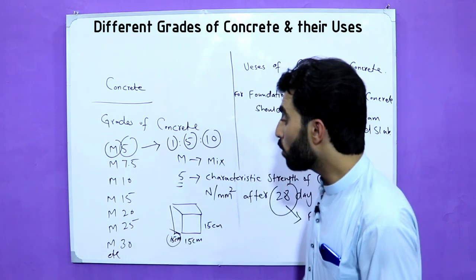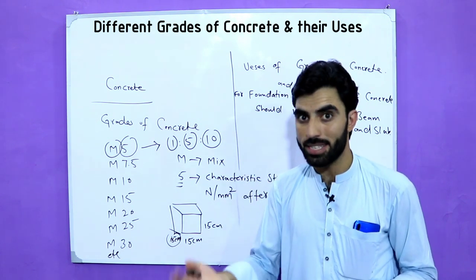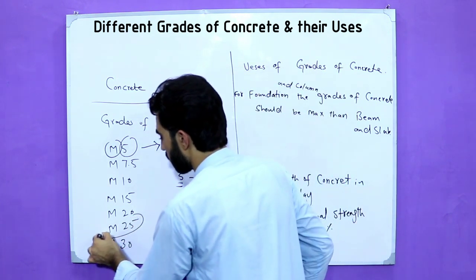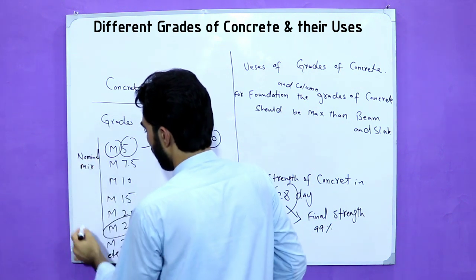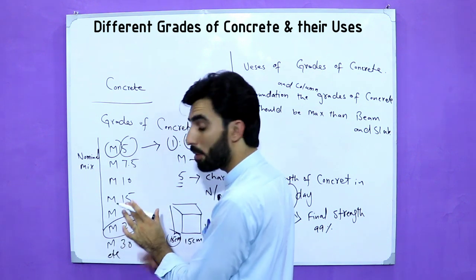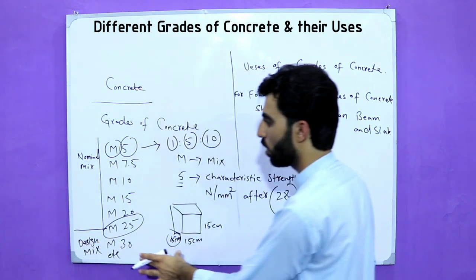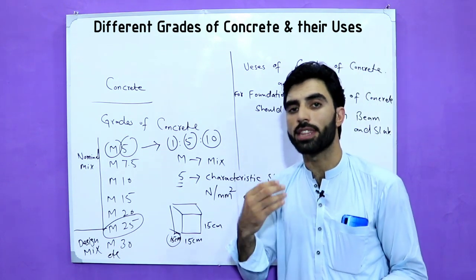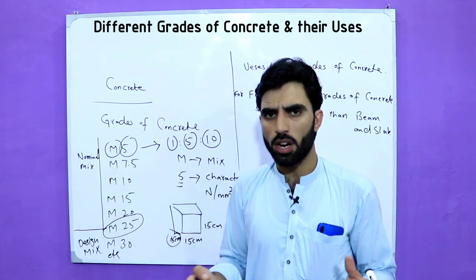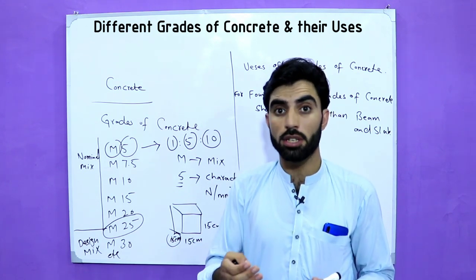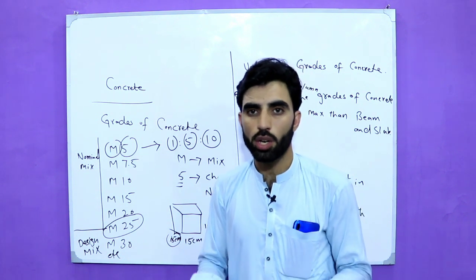There are two types of concrete mix: nominal mix and design mix. Grades up to M25 are called nominal mix, while grades above M25 — such as M30 or higher — are called design mix, where the concrete is specially designed for the structure. Nominal mix concrete is used for light or domestic projects, while design mix is used for high-strength or heavy-duty projects.